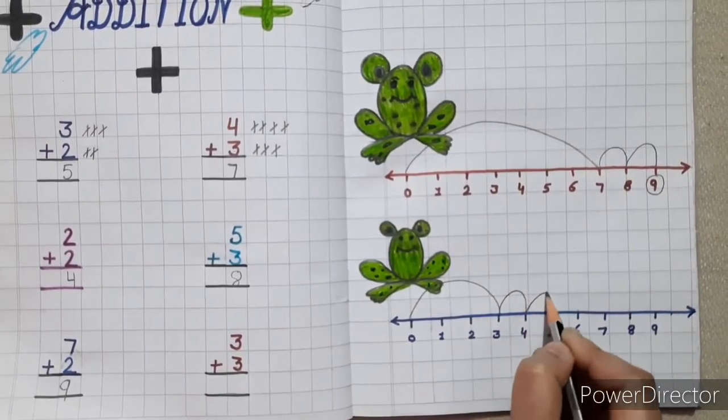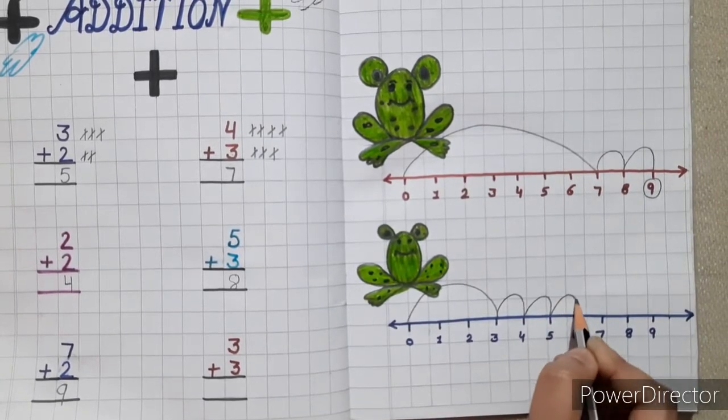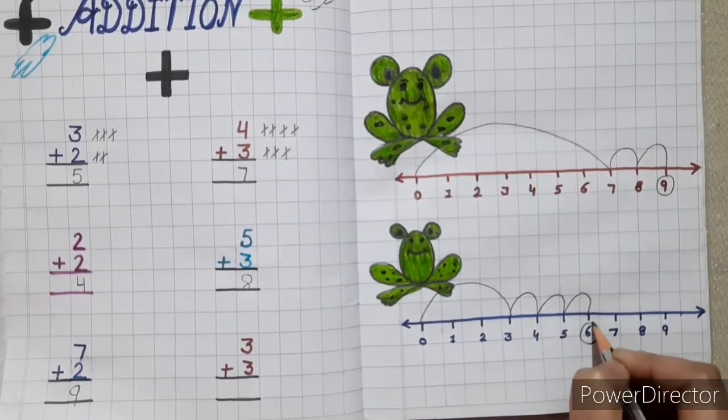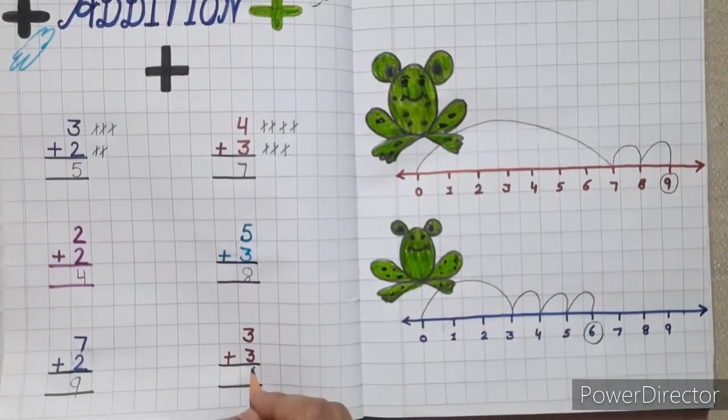1, 2, and 3. Here, answer is 6. So write 6 here.